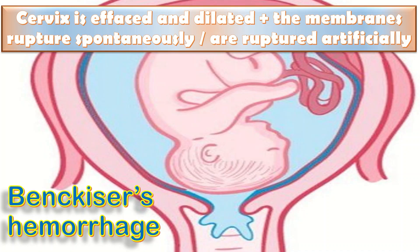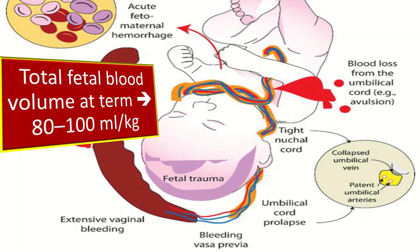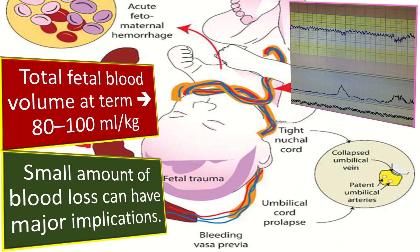As the total fetal blood volume at term is approximately 80 to 100 ml per kg, the loss of what may appear as a relatively small amount of blood can have major implications for the fetus and is rapidly fatal.